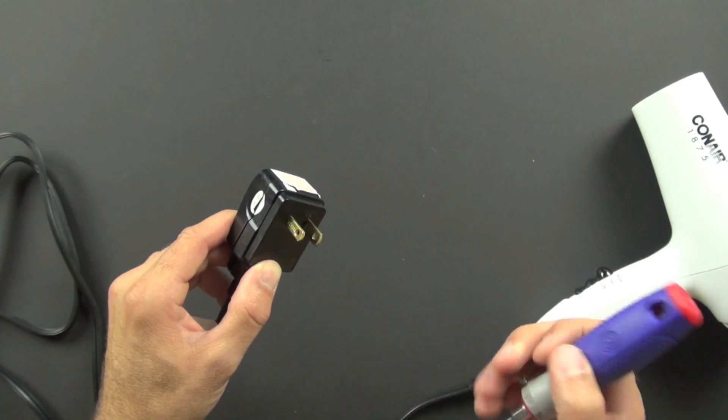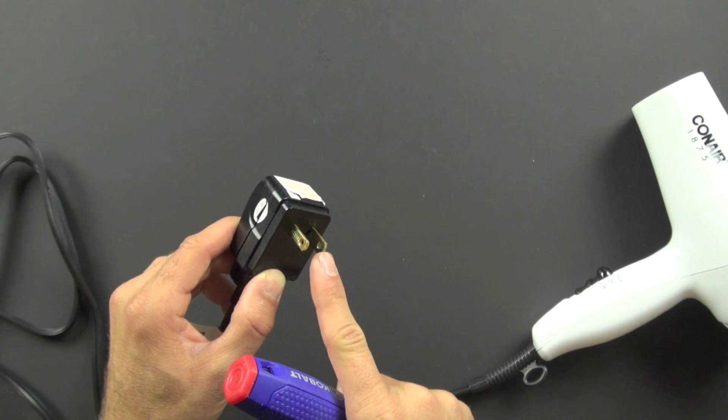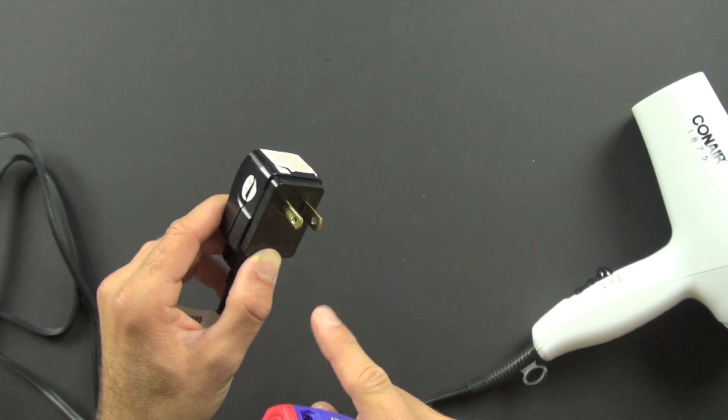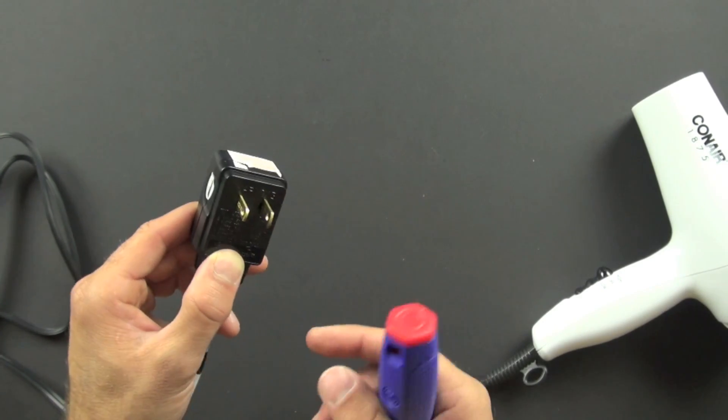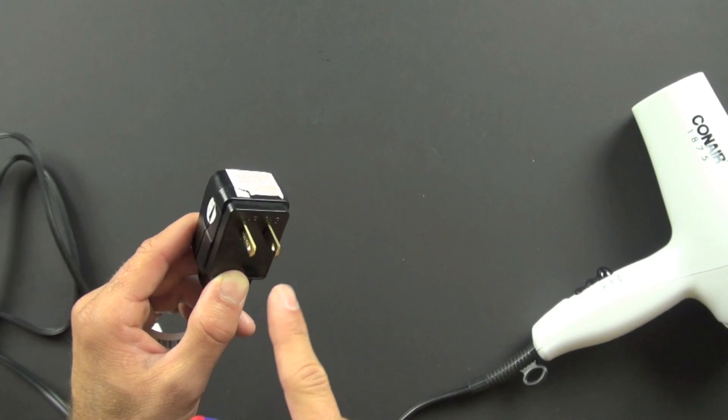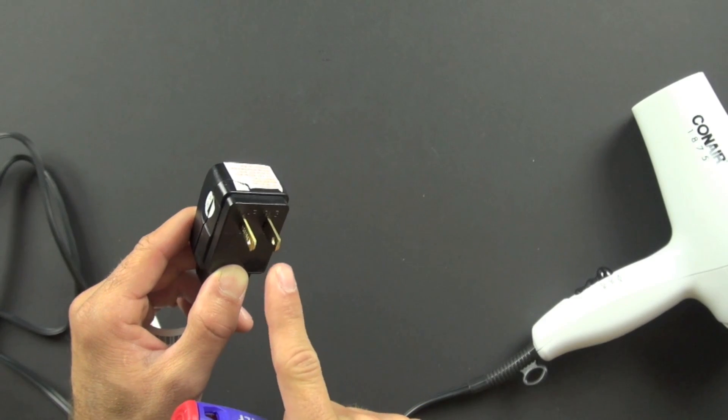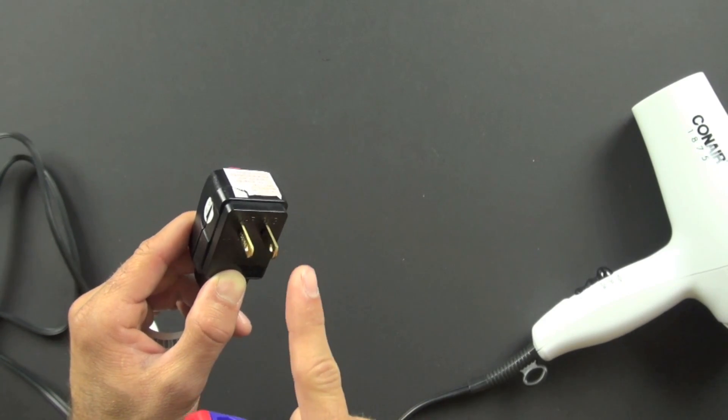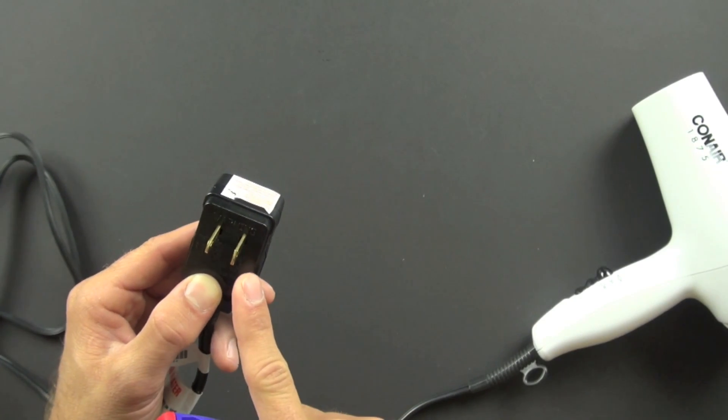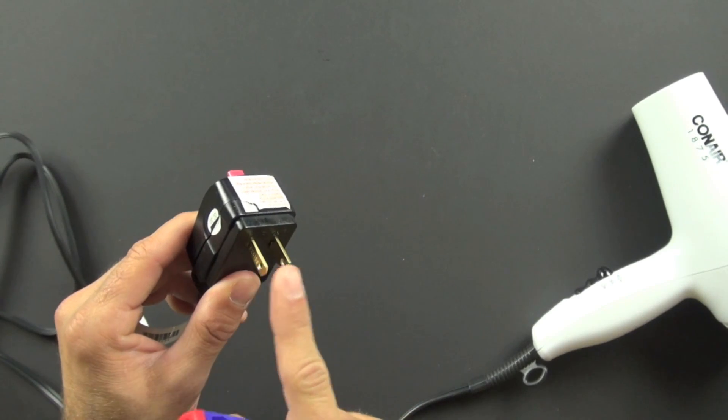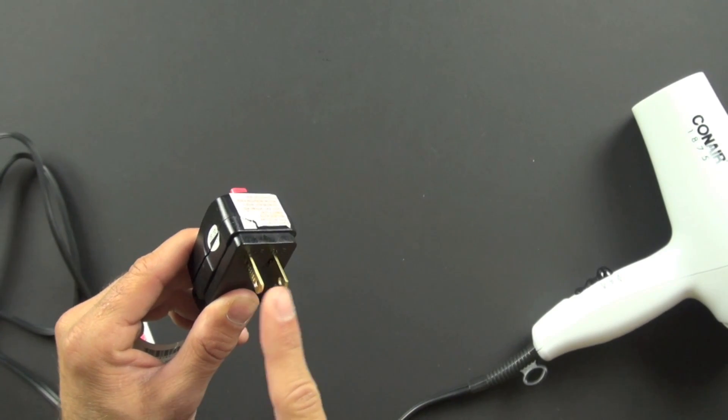The larger prong is the neutral prong, and that means you can't plug this plug in incorrectly. It has to go in only one way, and that means that the power is grounded properly. So the power always goes to ground, and that's a critical thing in a circuit like this. And so what this plug does is it's actually pretty smart.